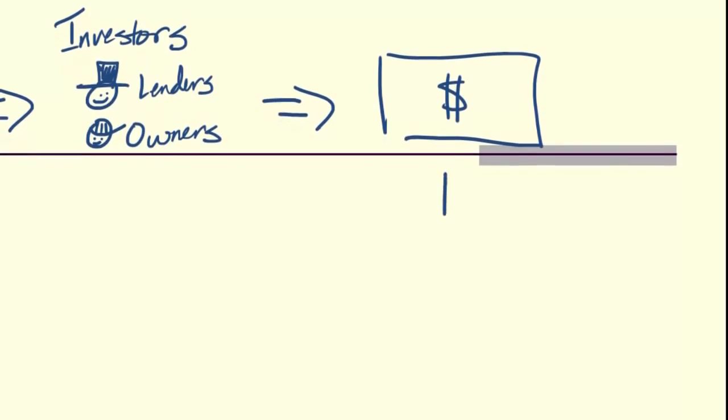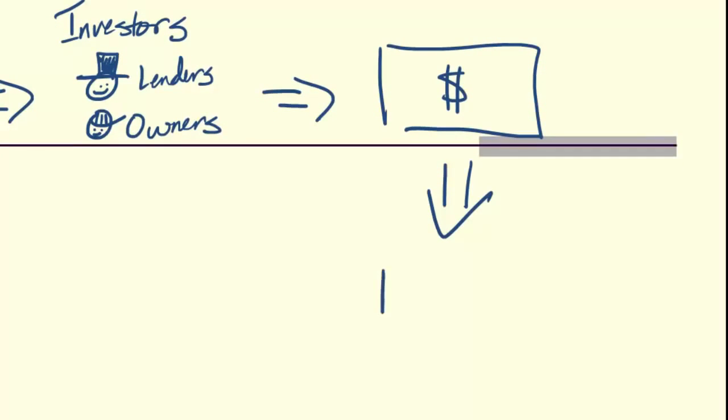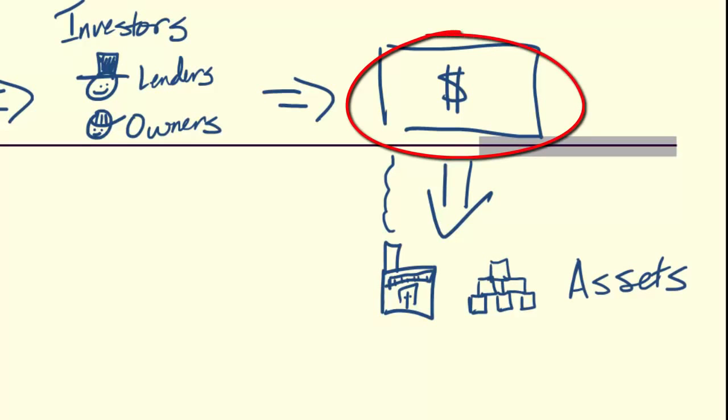And we take that money, and we buy assets with it. So we may build a factory. Here's our stack there. We'll put in a bank of windows. Or we might buy inventory. But we're basically providing assets to our business. We're turning this cash into these assets. Once we've got assets, of course, then we move on to the next step, and that is selling those assets, or those products, to make money.